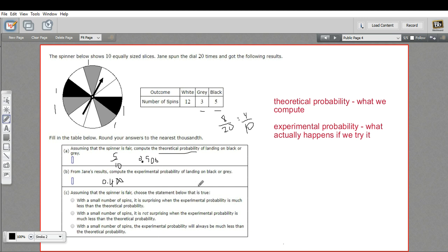C says, assuming the spinner is fair, choose the statement below that's true. The first statement says, with a small number of spins, it is surprising when the experimental probability is much less than the theoretical probability. Actually, it's not. With a small number of spins, you can have results that vary pretty widely from the theoretical probability. So that wouldn't be surprising.